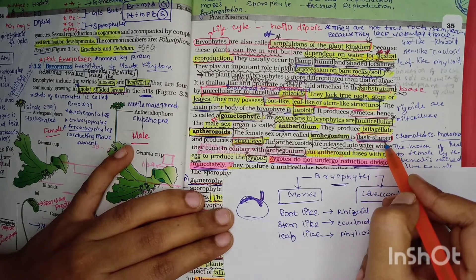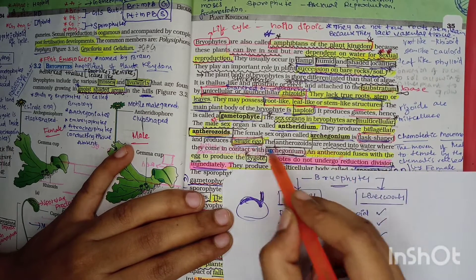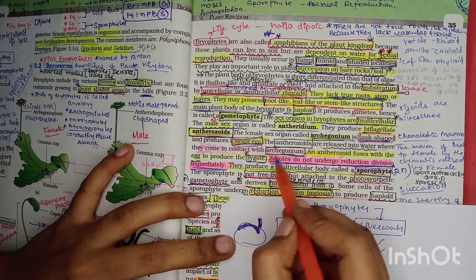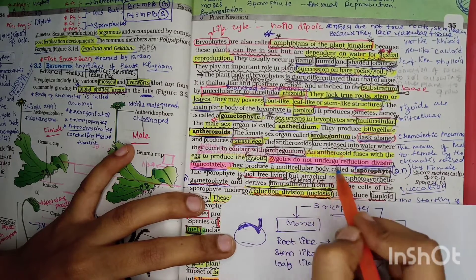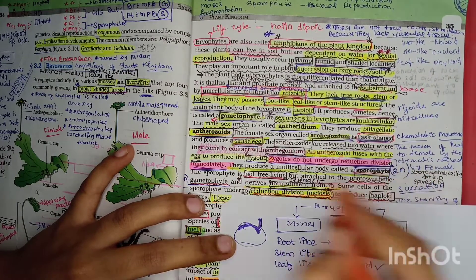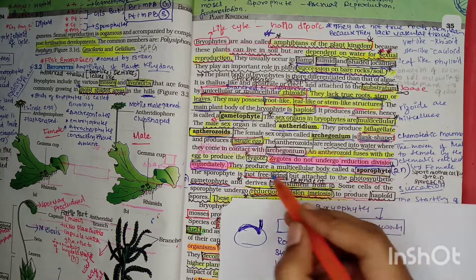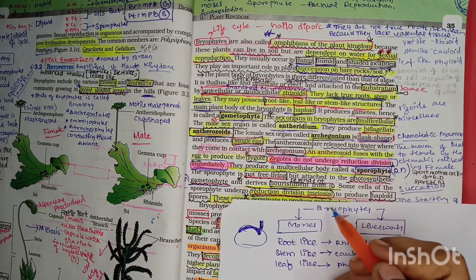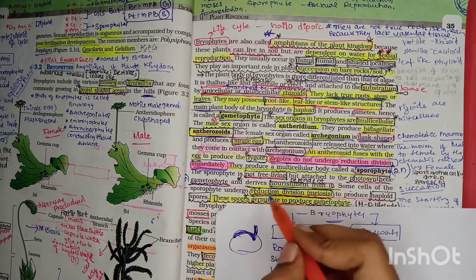The female sex organ is archegonia. It is flask-shaped and produces a single egg. Many antherozoids are produced but only a single egg is produced within the archegonia. The antherozoids are released into water, come in contact with the archegonium, and fuse with the egg to produce a zygote. The zygote does not undergo reduction division immediately. Instead, it produces a multicellular body known as sporophyte, which is diploid.